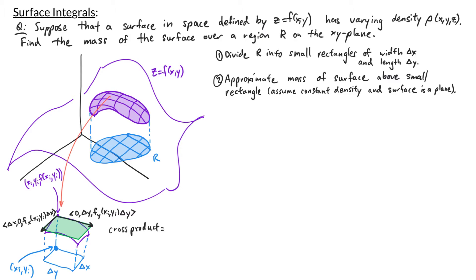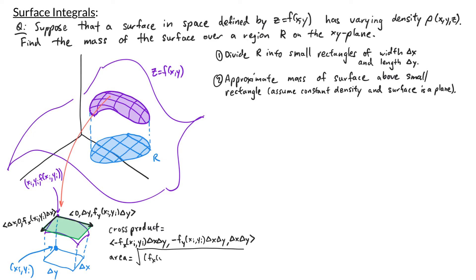Taking the cross product of the two vectors, we get (negative fx at xi yi times delta x delta y, negative fy evaluated at xi yi times delta x delta y, delta x delta y). The area of the tangent plane is the magnitude of that cross product. Calculating the magnitude, we have the square root of fx evaluated at xi yi squared plus fy evaluated at xi yi squared plus one, times delta x delta y.